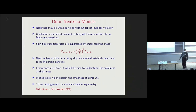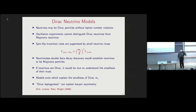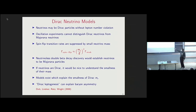What about Dirac neutrinos? Dirac neutrinos are completely consistent with the oscillation data — the oscillation data do not distinguish between Dirac and Majorana neutrinos. One might worry about the extra degrees of freedom in the early universe or astrophysical settings, but the spin-flip transition rate goes like the neutrino mass over neutrino energy squared, so the rate is highly suppressed compared to the weak interaction rate. Everything seems to be completely consistent.